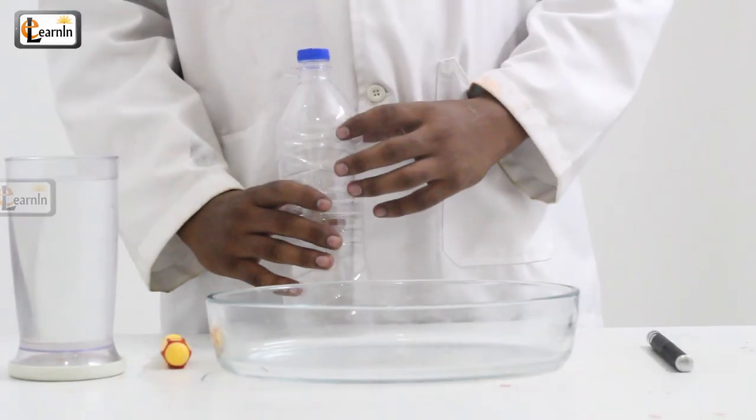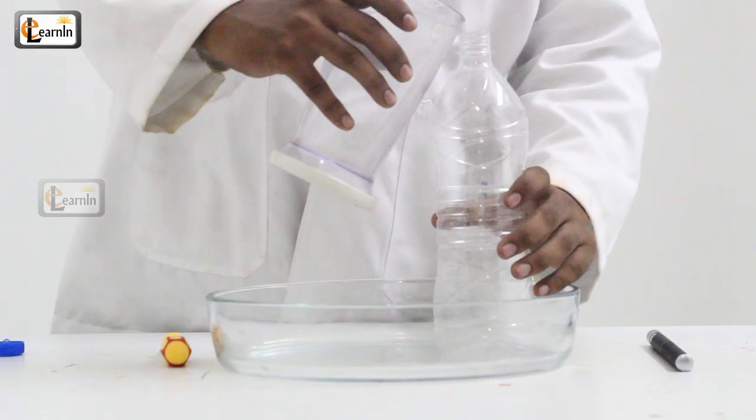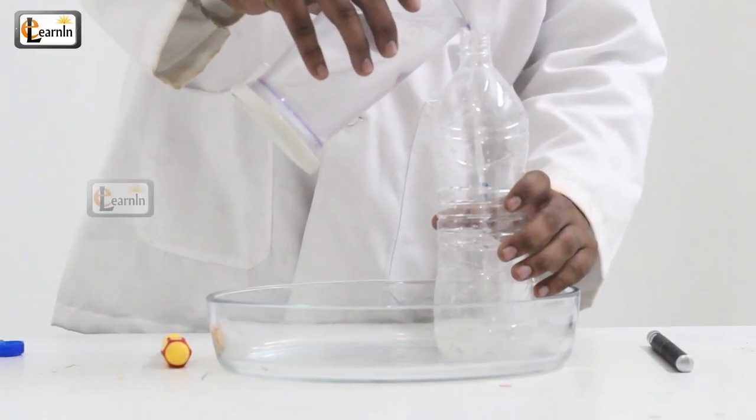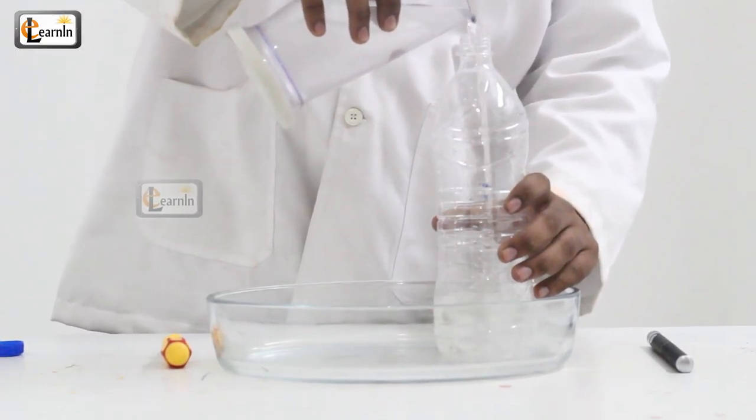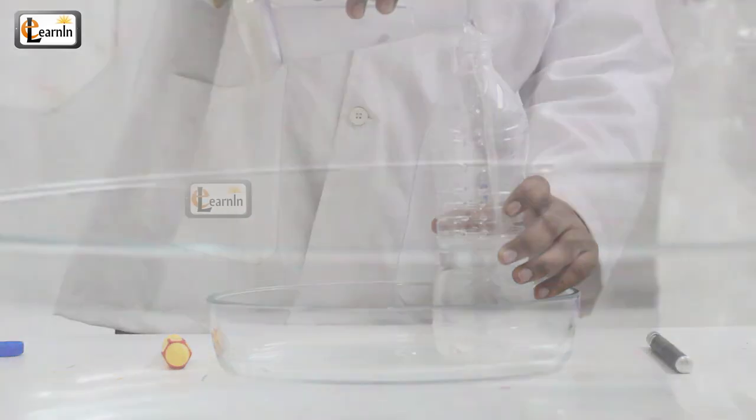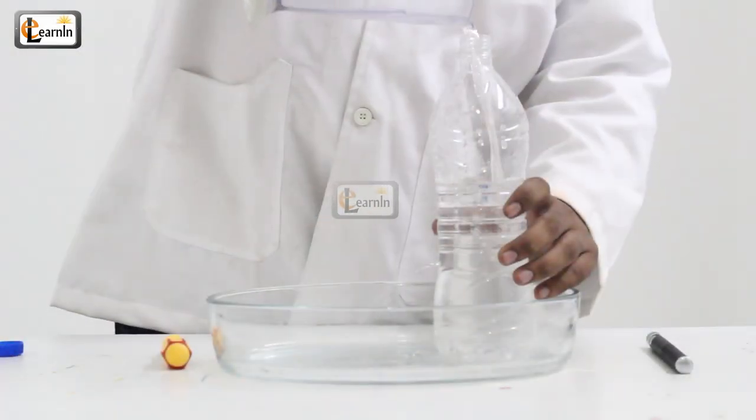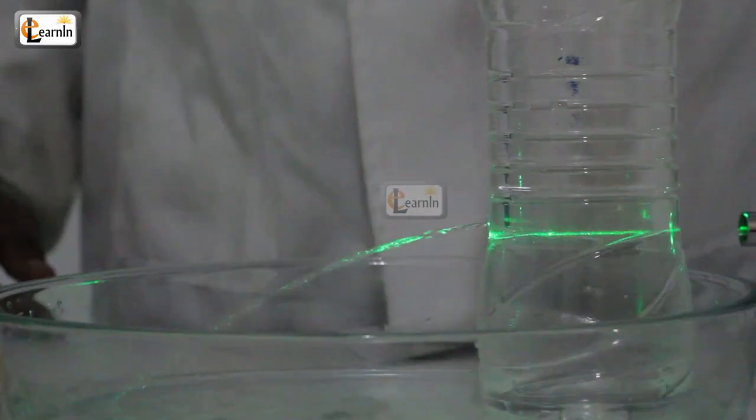Put the bottle in the bowl and fill the bottle with water. You'll notice that the water starts flowing out of the bottle through the hole. Now using the laser, project the beam horizontally towards the hole from the other side of the bottle.